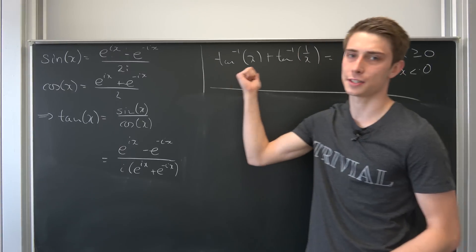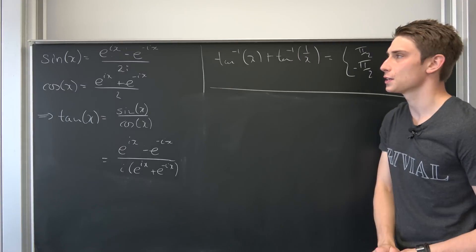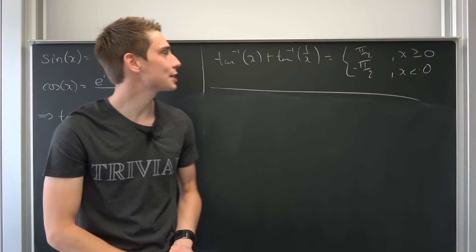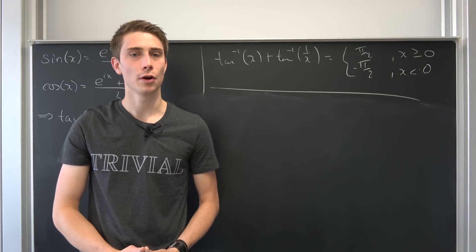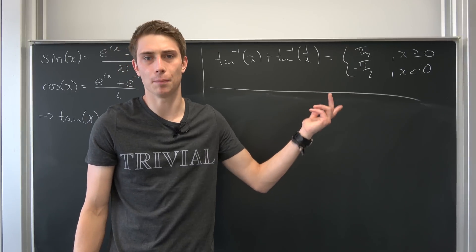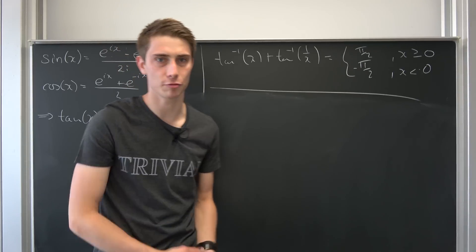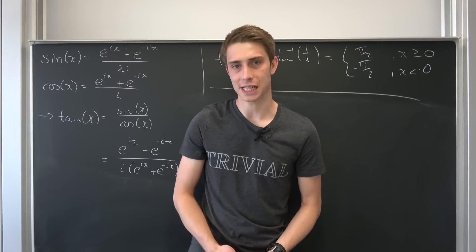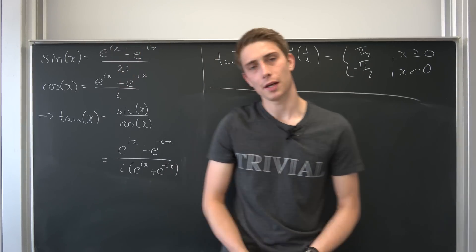We would like to derive the identity that arctan(x) plus arctan(1/x) is either π/2 or −π/2, depending on your x value.